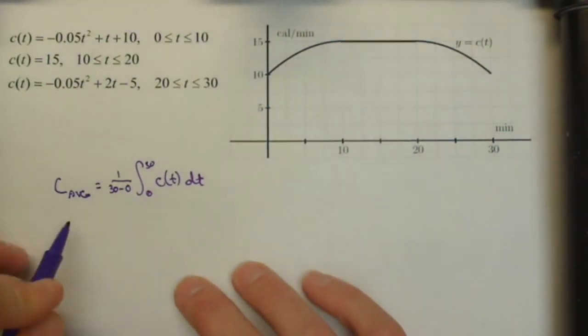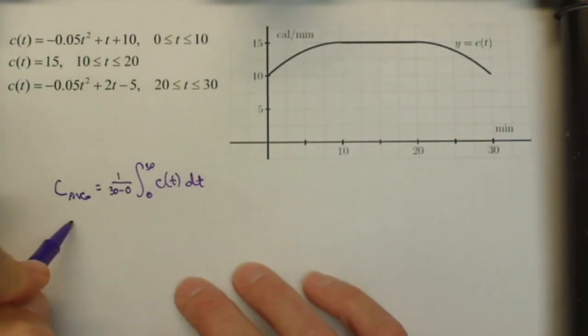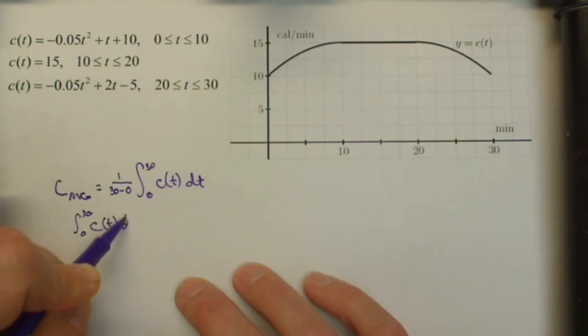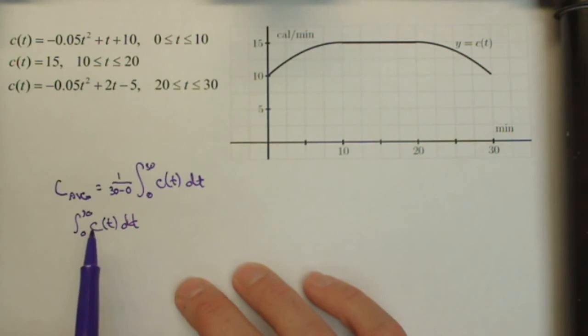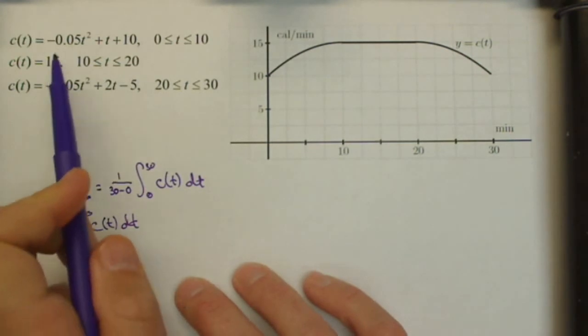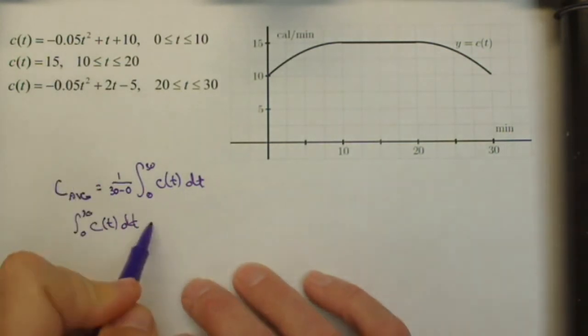Now, first, let's go ahead and calculate this integral from zero to 30 of C of T, DT, talk about its meaning a little bit, and then we'll make it an average value. So this is C of T, DT. Now here's the thing we gotta be careful about. This C of T is defined differently for different intervals.